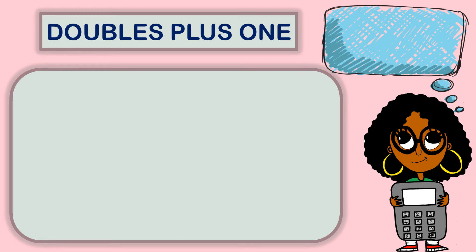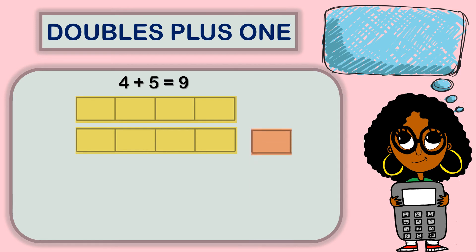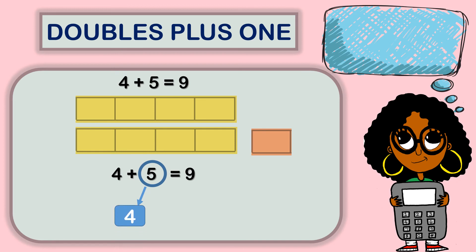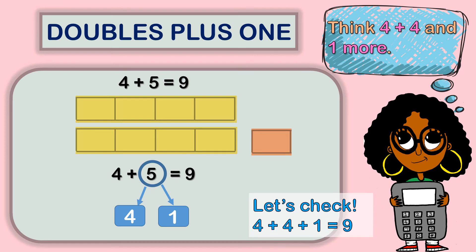Let's look at doubles plus one. Here I have four and then four again in the picture. Now I am going to add one more, and now I will have four plus five. Four plus five equals nine. Let's look at the five — we are going to break it apart into two digits: four and one. Think like this: four plus four and one more is going to give you nine. Let's check. Four plus four plus one equals nine. You are doing so awesome. Let's continue.